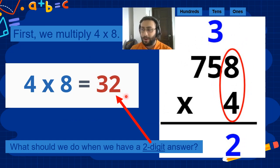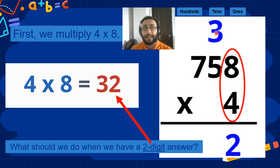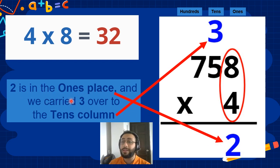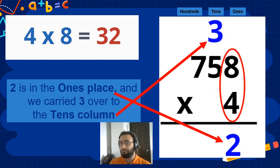Now we have a two-digit number, so we put 2 here and we put the 3 up here. We carry it to the next one — we regroup it. So 2 is in the ones place, we put it here and we carry 3 over to the tens column. Very simple.